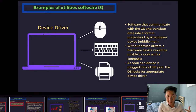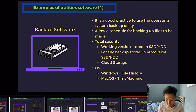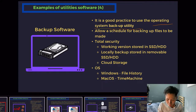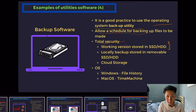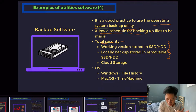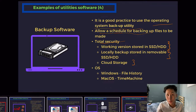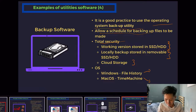Device drivers are software that enable your hardware to communicate with your software. Backup software is also important — it is good practice to use the OS backup utility. It will usually schedule backups to happen automatically, allowing data security. For example, a recorded video will first be stored in your computer's SSD, and backup software can also store it on an external HDD and in the cloud. On Windows this is called File History, and on Mac OS it's called Time Machine.